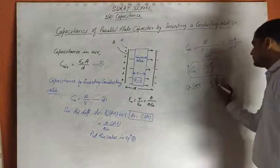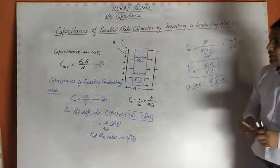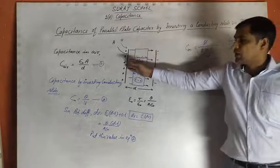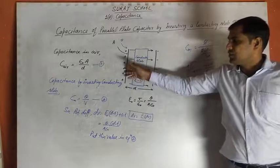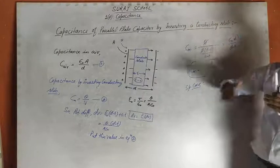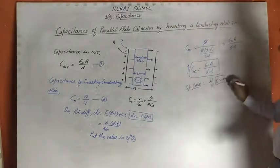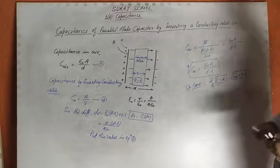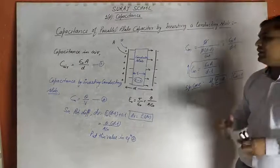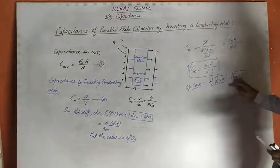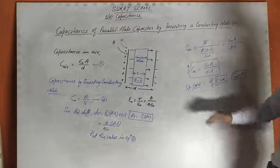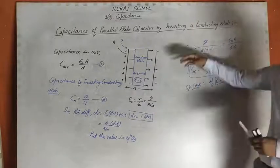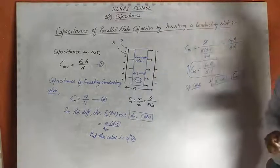If T is equal to D — meaning the conducting slab completely fills the space between the plates — then the entire region has zero electric field, and the capacitance becomes infinite. The device will behave as a complete short-circuit conductor. This was the derivation for inserting a conducting slab. In the next video, we will discuss inserting a dielectric slab. Thank you.